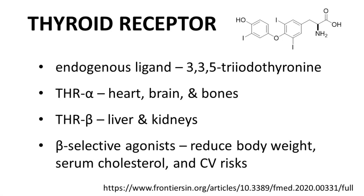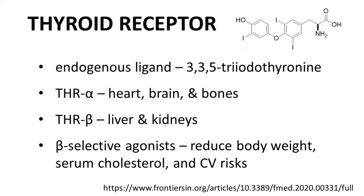The target for ResDifera is the thyroid receptor. One of the endogenous ligands for this receptor is 3,3,5-triiodothyronine, shown in the upper right. There are multiple forms of the thyroid receptor: thyroid receptor alpha is mostly expressed in the heart, brain, and bones, while thyroid receptor beta is mostly expressed in the liver and kidneys. As you might guess, ResDifera, which reduces liver fibrosis, focuses on the beta form. Beta-selective agonists of the thyroid receptor can cause reduction in body weight, serum cholesterol levels, and cardiovascular risks.